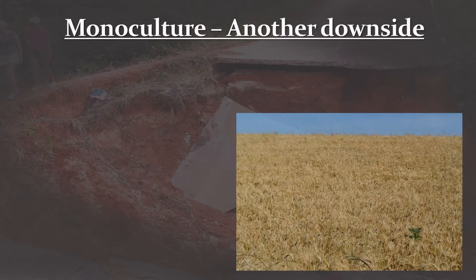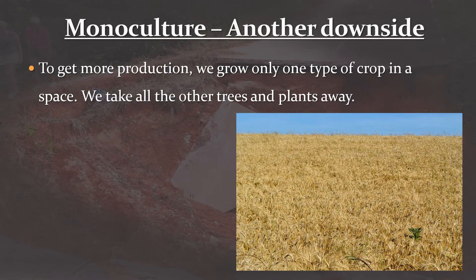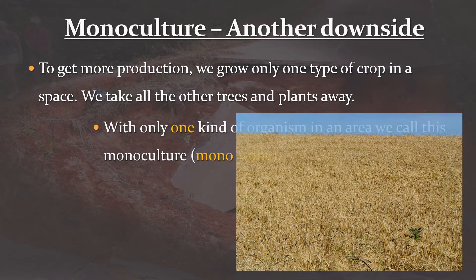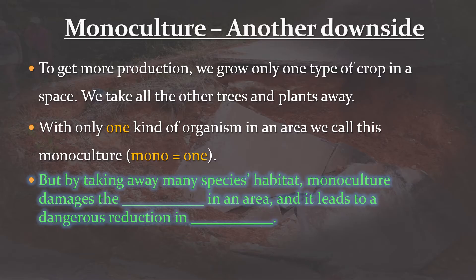Another downside of intensive farming, or perhaps another way of looking at one we have seen already, is monoculture. To get the most production, we grow only one type of crop in a space, and we take all other species away. This is why it is called mono — mono means one — and so with only one kind of organism in an area, we have a monoculture. But by taking away the species' habitat, we damage the ecosystem by reducing the amount of biodiversity in an area.